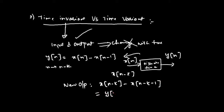This can also be written as y of n minus k, which means if the input signal is delayed by k units, the output signal is also delayed by k units. This tells us the system does not depend on time, and so this system is said to be a time invariant system.